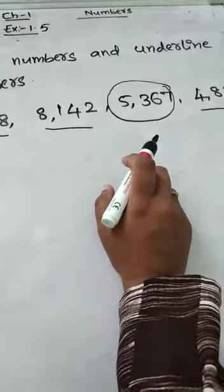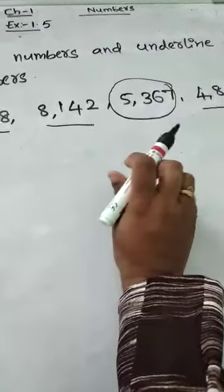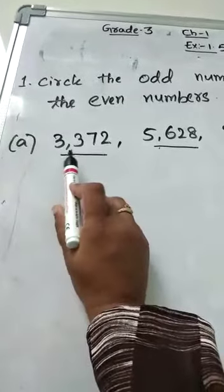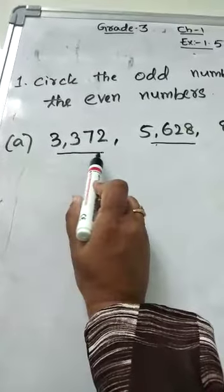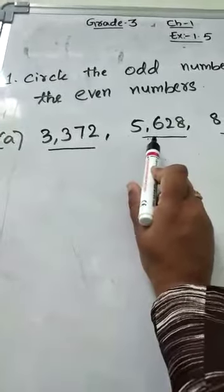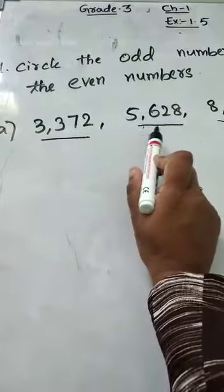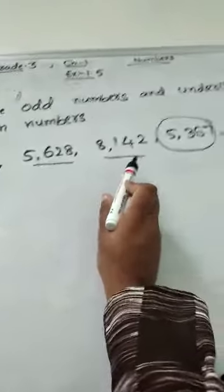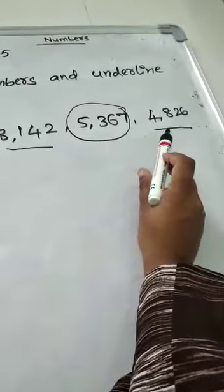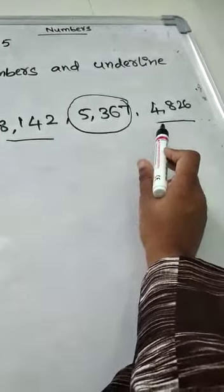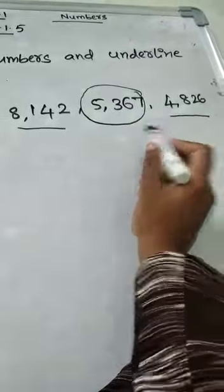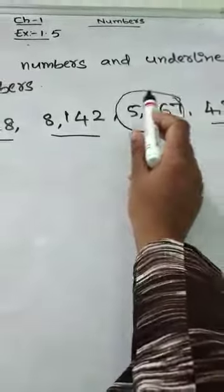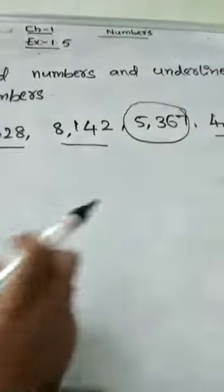I already explained this briefly in the previous class. Now, 372 is an even number, so I am underlining this. 628 is an even number, so I am underlining this. 142 is an even number, so I am underlining this. 826 is an even number, so I am underlining this. 367 is an odd number, so I am circling this.